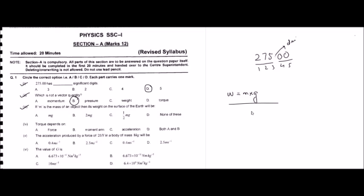Weight is the product of mass times gravitational field strength. Looking at the options: option A is mg, which is the correct option. Option B, 2mg, is not correct. Half times mg is not correct. Option D, none of these, is also not correct. So option A is the right answer.